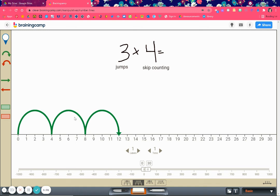There we have it. 3 jumps of 4 makes 12. So my product is 12. That's as simple as it gets for multiplication using a number line.